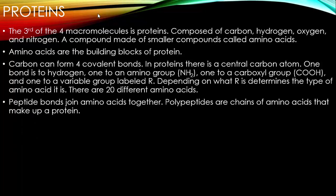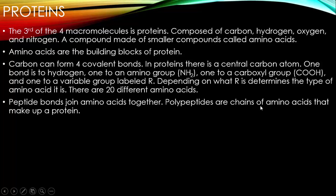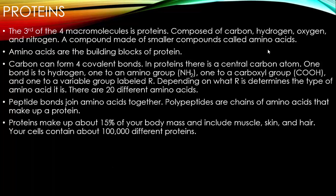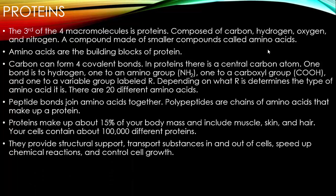Peptide bonds join amino acids together. Polypeptides mean many peptide bonds — many amino acids joined together. When you have many amino acids joined together, they make up a protein, because a protein is a compound made of smaller compounds called amino acids. Proteins make up about 15% of your body mass, including muscle, skin, and hair. Your cells contain about 100,000 different proteins, and your body is constantly using amino acids to build those proteins.